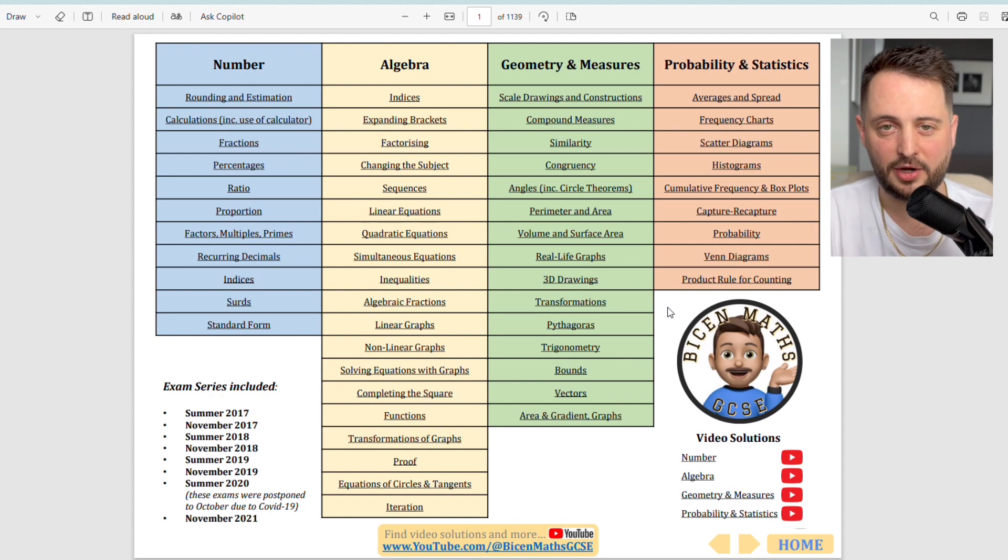So this is the best way that I think you should use this. Download it as a PDF, and then you're going to find a particular topic you're wanting to do some revision for. Maybe you've prepared things on SOHCAHTOA, so you'd go to the document, to the green section, which is about shape, you'd find the part about trigonometry.